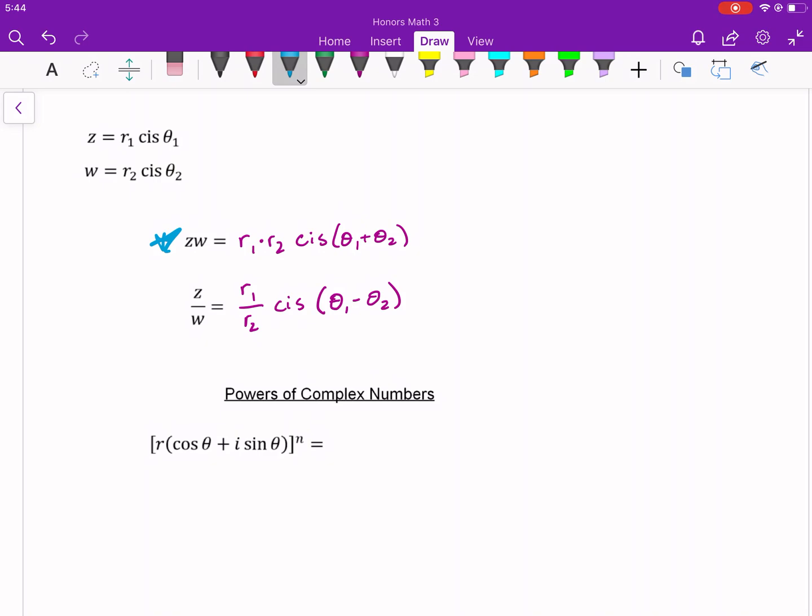So then powers of complex numbers. Now, when you're raising something to a power, that's just the same thing as multiplying over and over and over again. So I could write this as r cis of theta to the n, right? So we're raising all that to the nth power. Well, that's just the same thing as doing r cis theta times r cis theta times r cis theta. You get the point. And we're doing that n times.